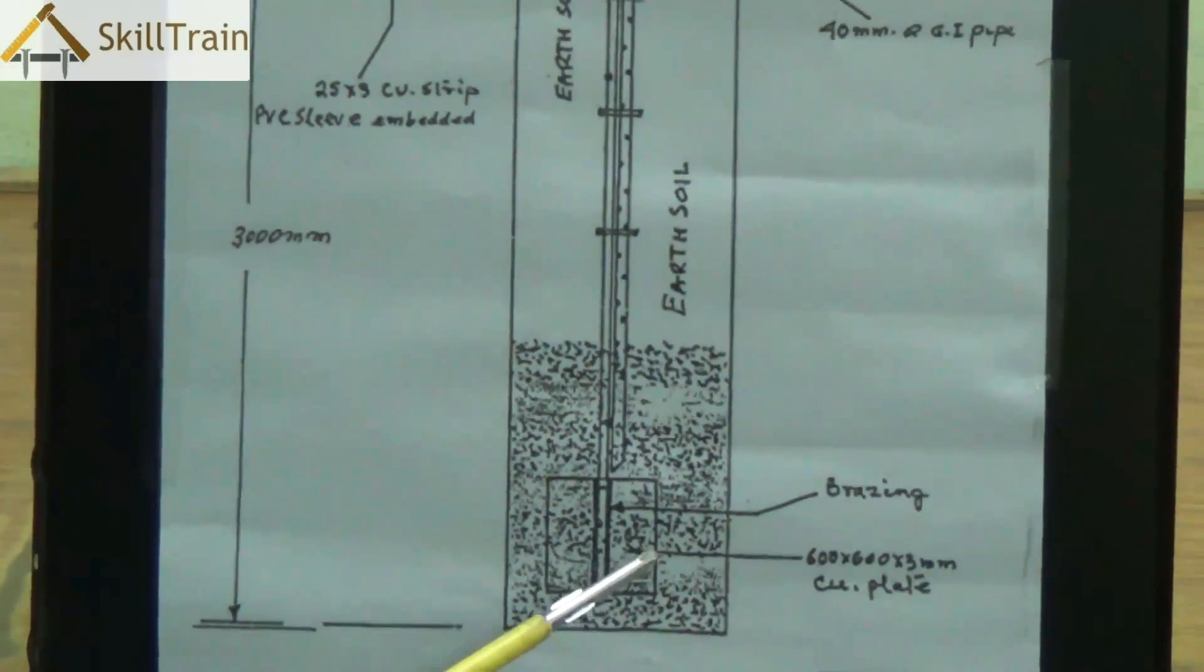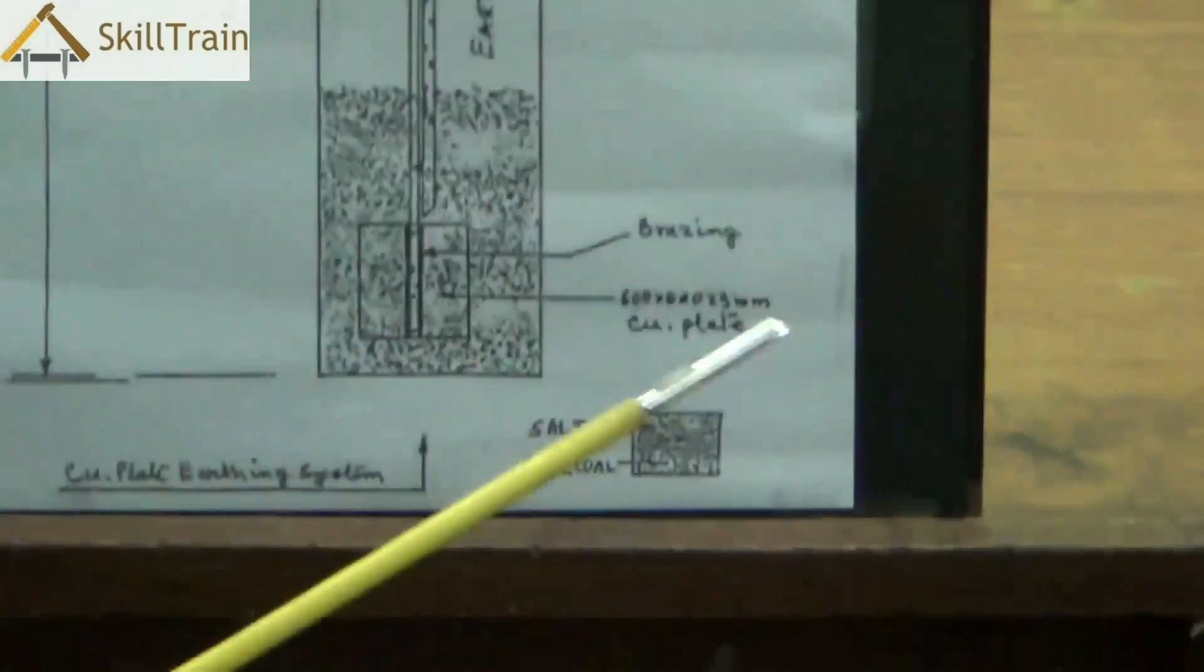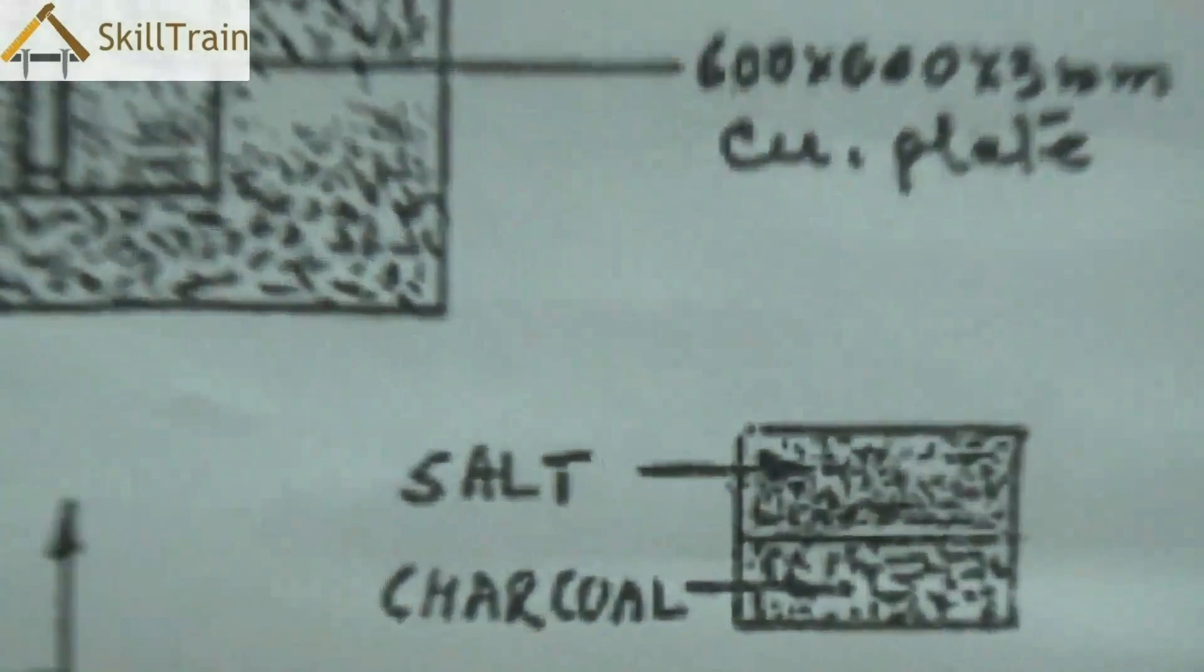So the copper plate typically is best if it is soldered onto the copper wire that's connecting it or you can bolt it to that particular thing.